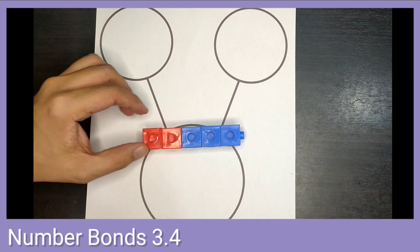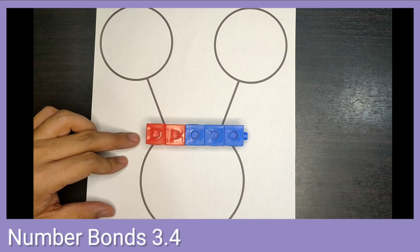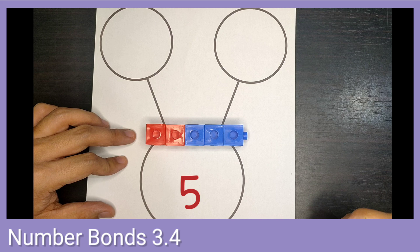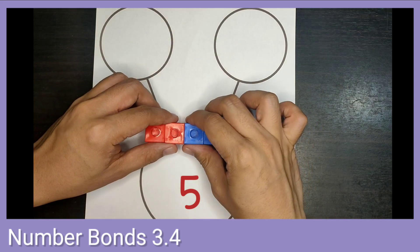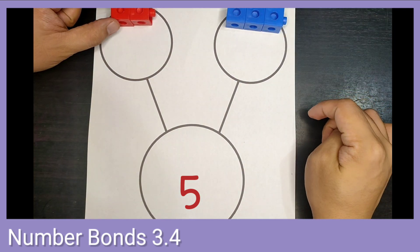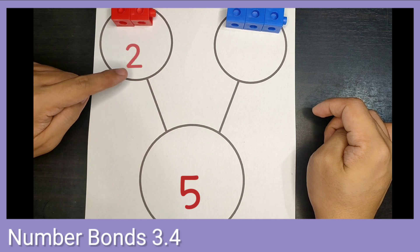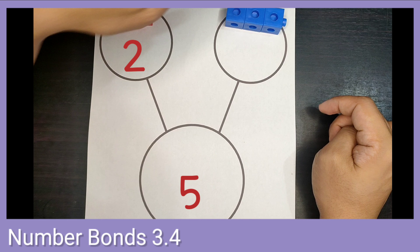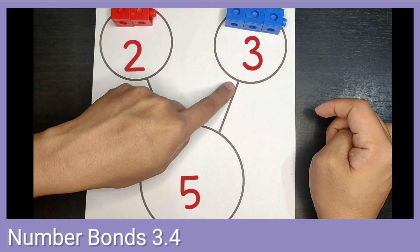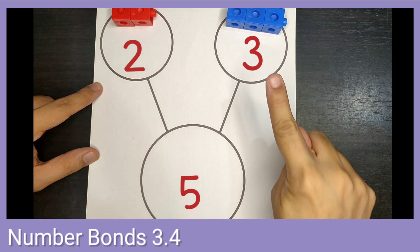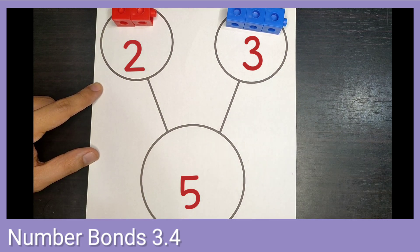We have another set of connect cubes. We have 1, 2, 3, 4, 5. Let's separate them by color. 1, 2 — 2 red connect cubes. 1, 2, 3 — 3 blue connect cubes. 2 and 3 make 5.